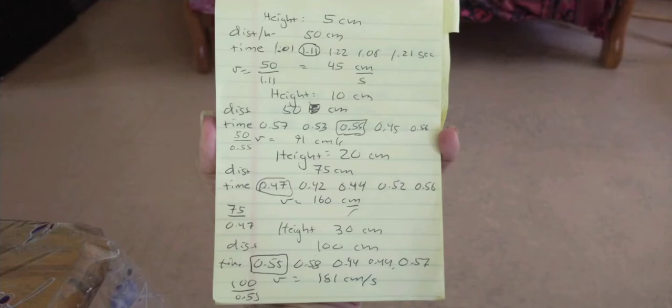Once I have the median time, then I divide that into the distance the marble rolled. So when I rolled the marble from a height of 5 centimeters, I was timing it across a distance of 50 centimeters. So I took the 50 and divided by the 1.11 and got 45 centimeters per second. That's the number I want, the velocity of the marble. From a height of 10 centimeters, I was rolling it also a distance of 50 centimeters. And so I took 50 and divided by the median time of 0.55, and out of that calculated a velocity of 71 centimeters per second. When I went up to 20 centimeters, I increased the distance of roll to 75, and the median time was 0.47 seconds. So I divided the 75 centimeters by 0.47 seconds. And so that gave me 160 centimeters per second. And that's where I got my velocities from.